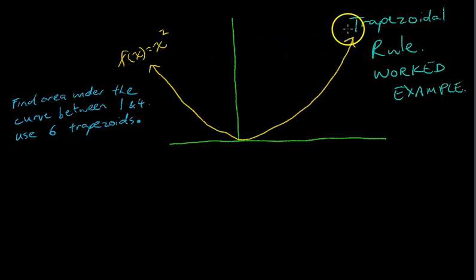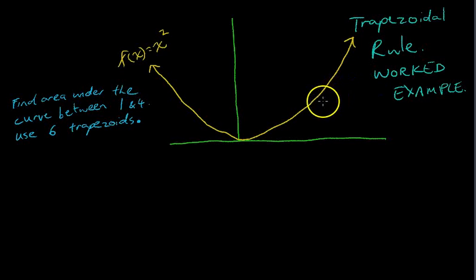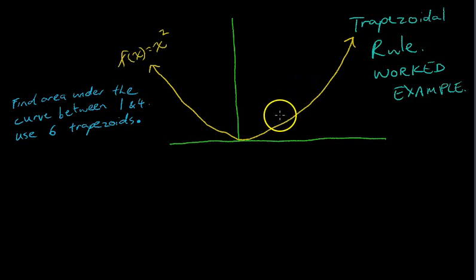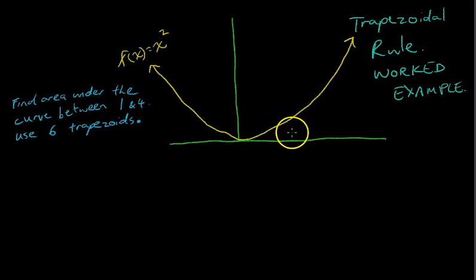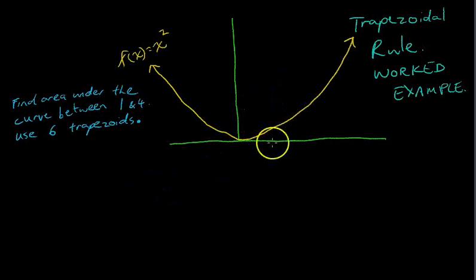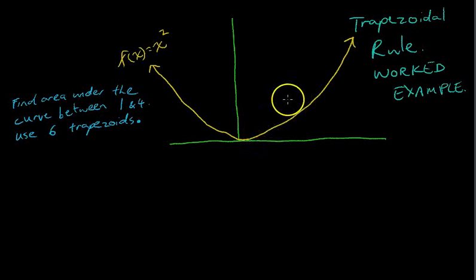We're still working on the trapezoidal rule, and this time we're actually going to do a worked example. Now, this does get quite complicated at times, but if you really realise what you're actually doing is finding a bunch of trapezoidal shapes, finding the areas of each and adding them together, it's pretty much grade 9 stuff. At the very end of this video you will get a nice neat little formula that makes it all simple, but I really want to spend some time explaining how it actually works first.